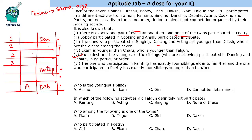These two people at positions four and five are equal in age, and one of them is the painter. It does not matter which we write above or below since both are the same age. Now, the clue says that the participants in singing, dancing, and acting are all younger than Daksh, who is not the eldest. Since dancing is already placed at the youngest position, singing and acting must fill the two positions just below Daksh, and Daksh cannot be at the top.